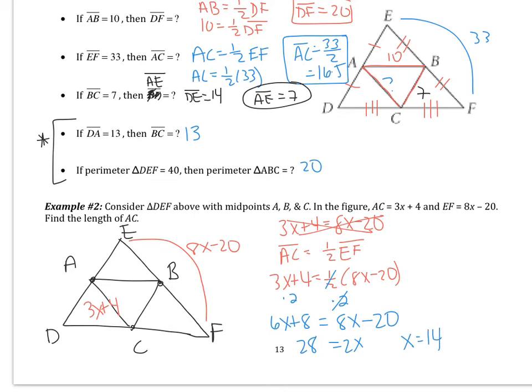Now the problem, though, specifically asks for AC. So AC is going to be 3 times 14 add 4. So this will be 42 add 4. So AC ends up being 46. So problems like this are definitely more difficult. You need to think, what do I know about midsegments? And then set up the problem thinking it through. Don't just set random parts equal.